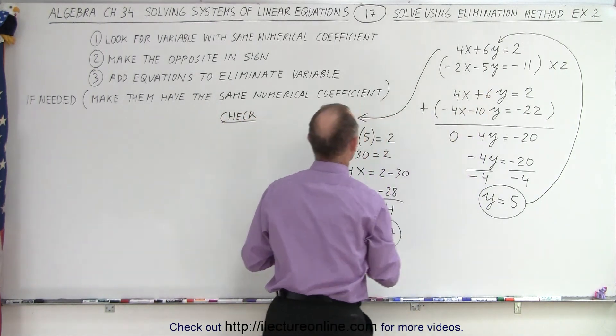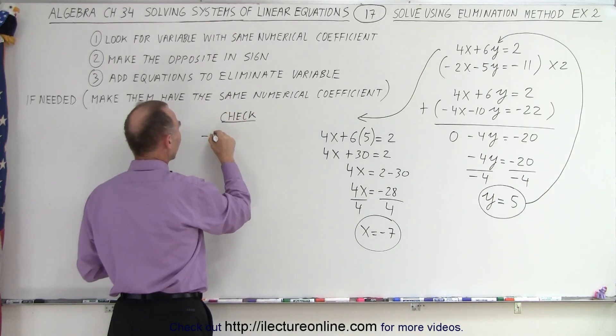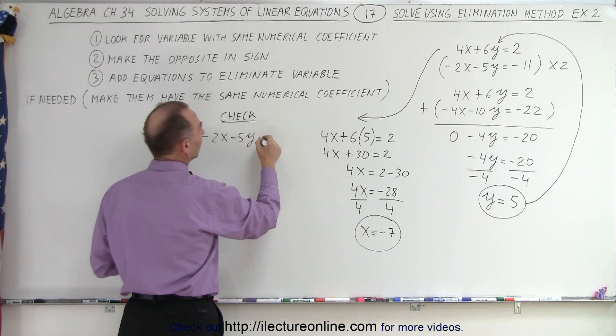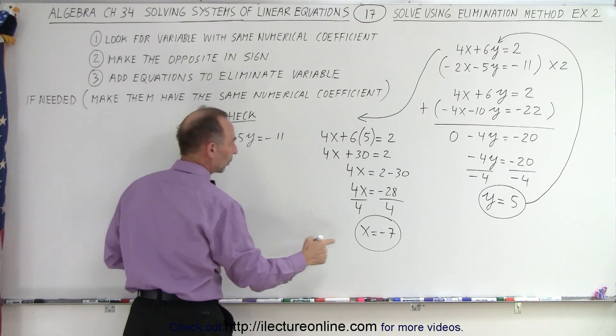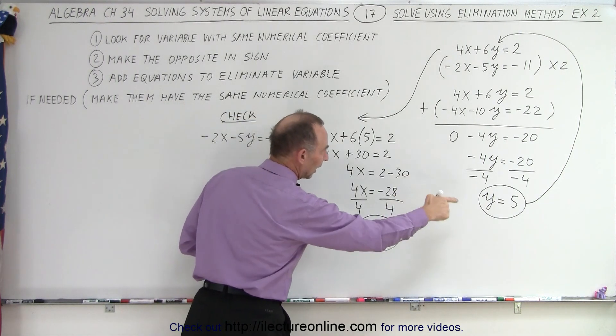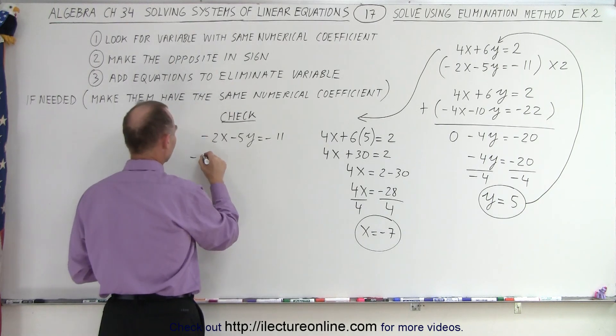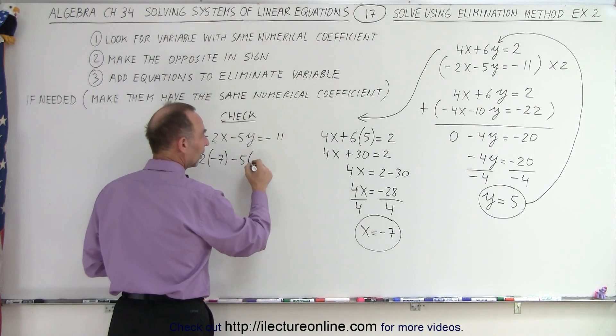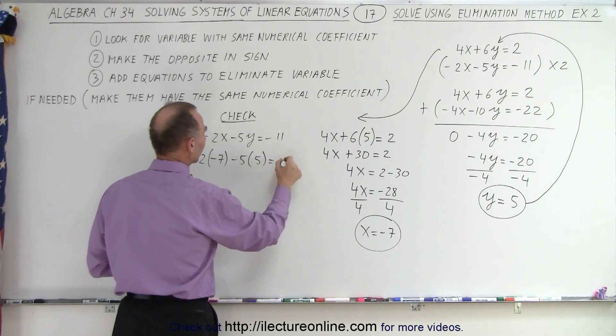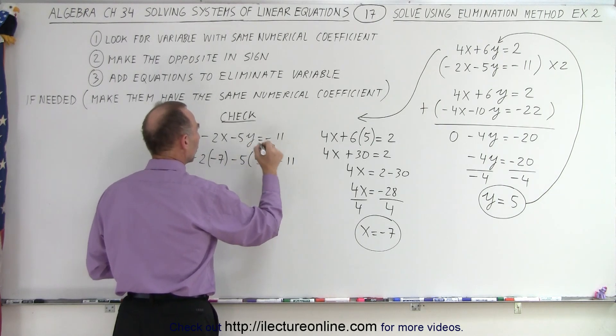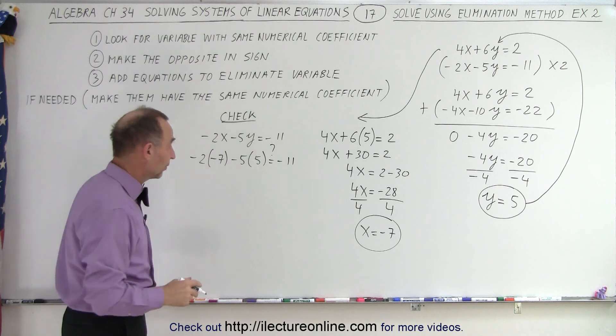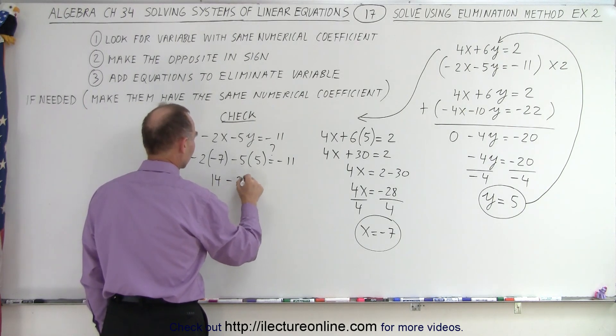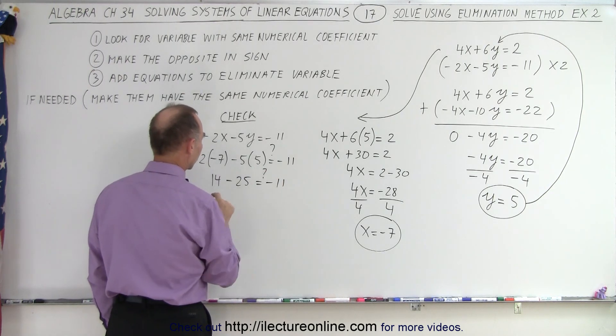So we'll grab the other equation. Minus 2X minus 5Y is equal to minus 11. Now we're going to plug in X equals negative 7 and Y equals 5. So negative 2 times negative 7 minus 5 times positive 5 equals negative 11. And of course, we want to see if that's indeed correct.